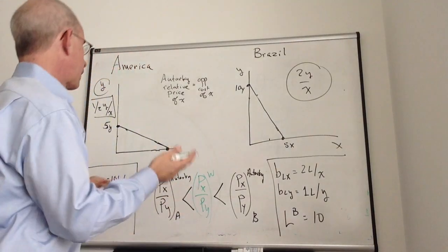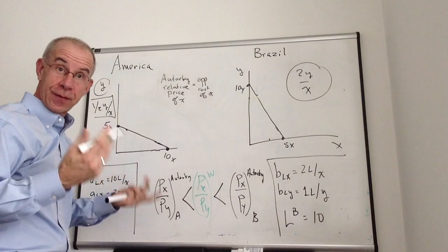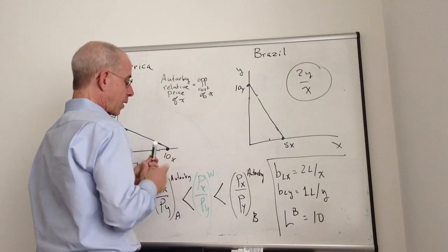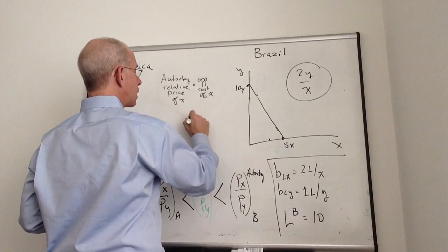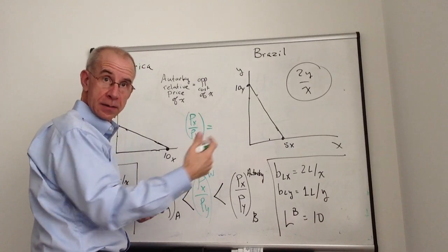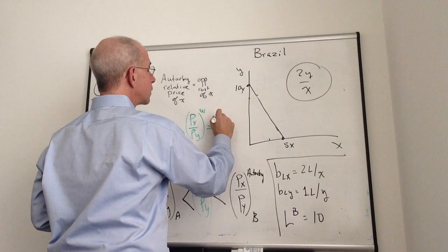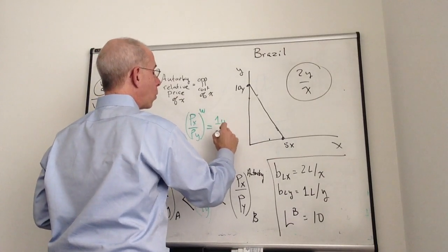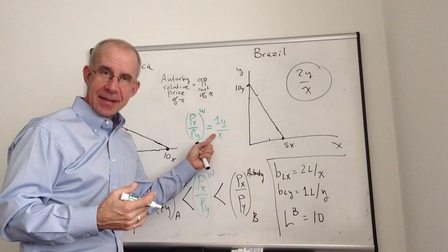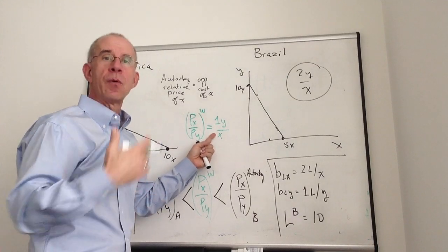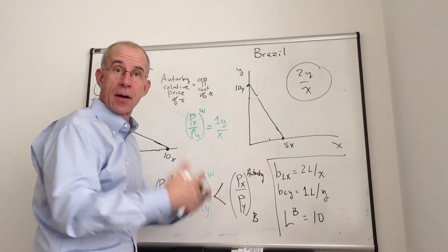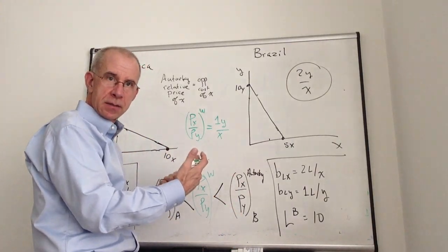I picked these numbers carefully so we have a very easy potential world trade price. In particular, let's imagine that the world price they've agreed to is one Y for every X. Make sure that you understand what that means. This is another way of saying that if I sell a unit of X internationally, I will earn enough money to buy one unit of Y. Or if I sell one unit of Y, I earn enough money to buy one unit of X. That's what that relative price is telling you.